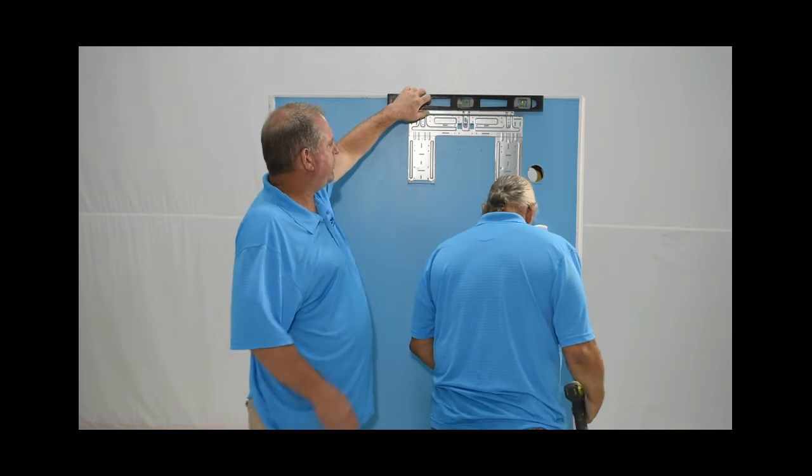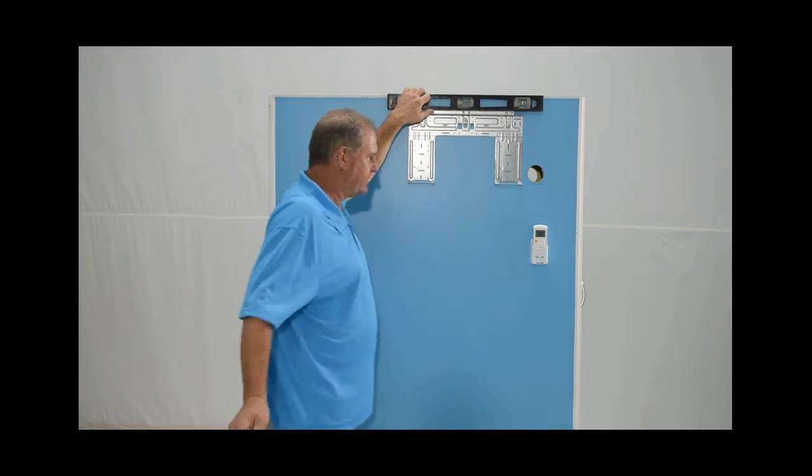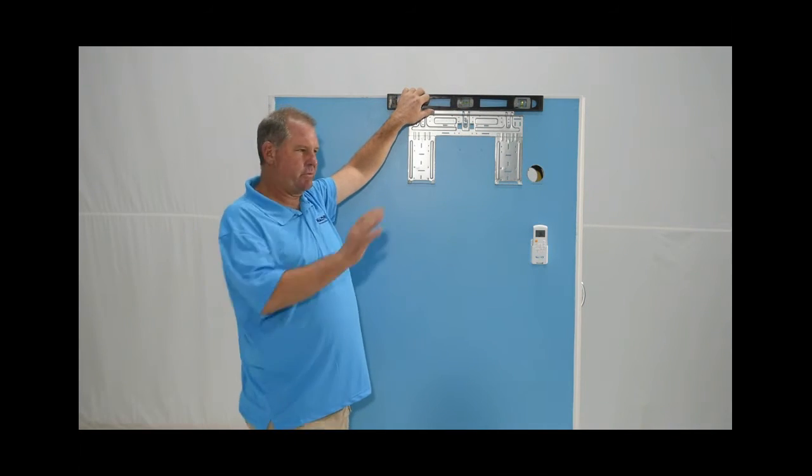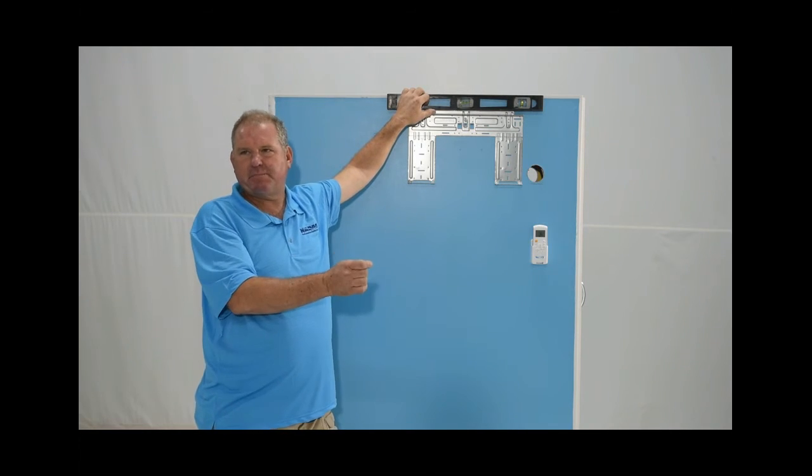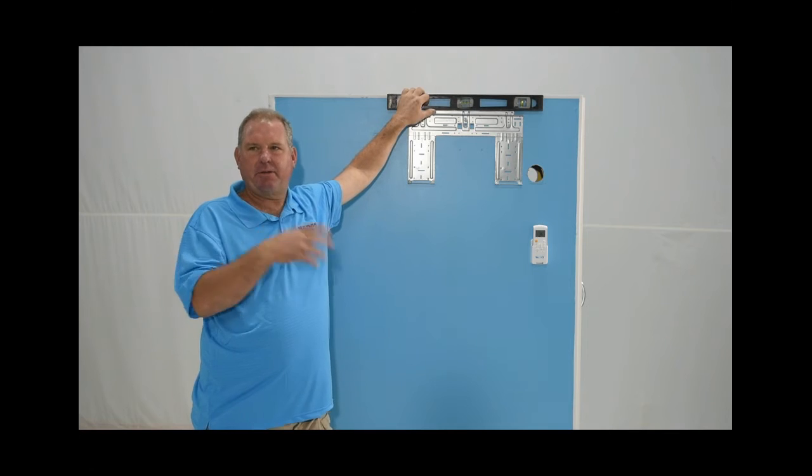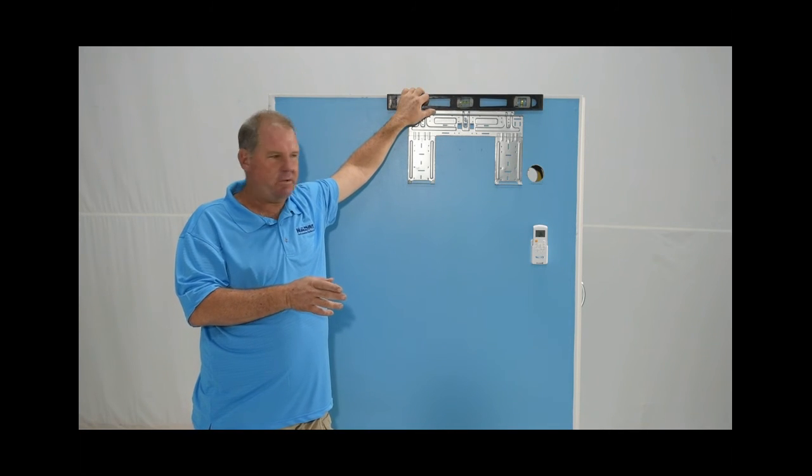Once you've got that bracket installed and you've verified that it's level, what we're going to do is move over to the air handler piece itself and make some simple connections.